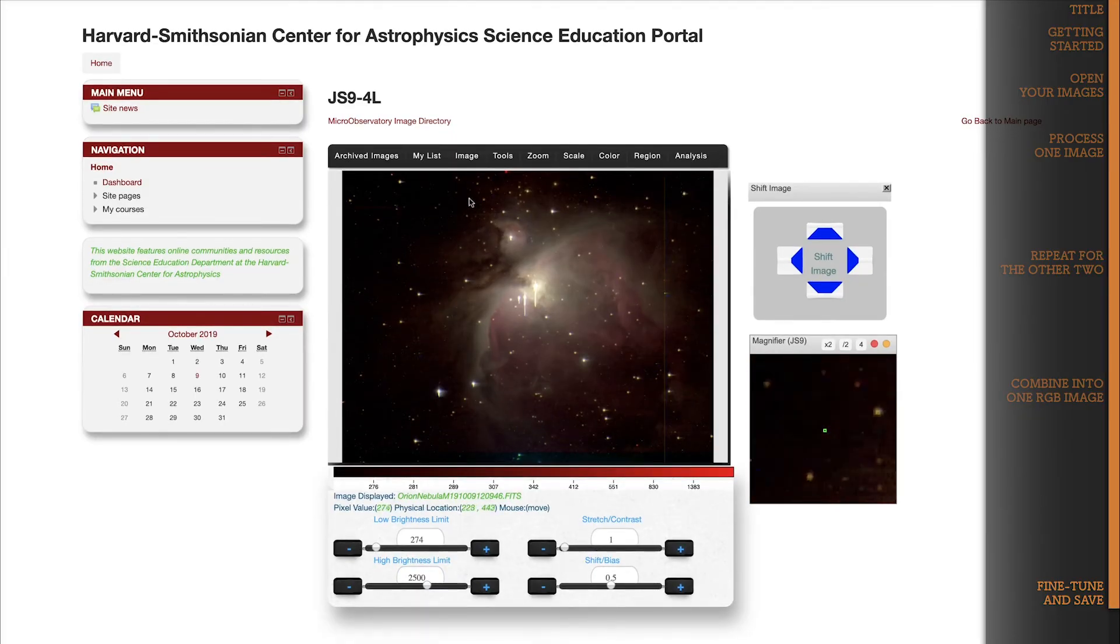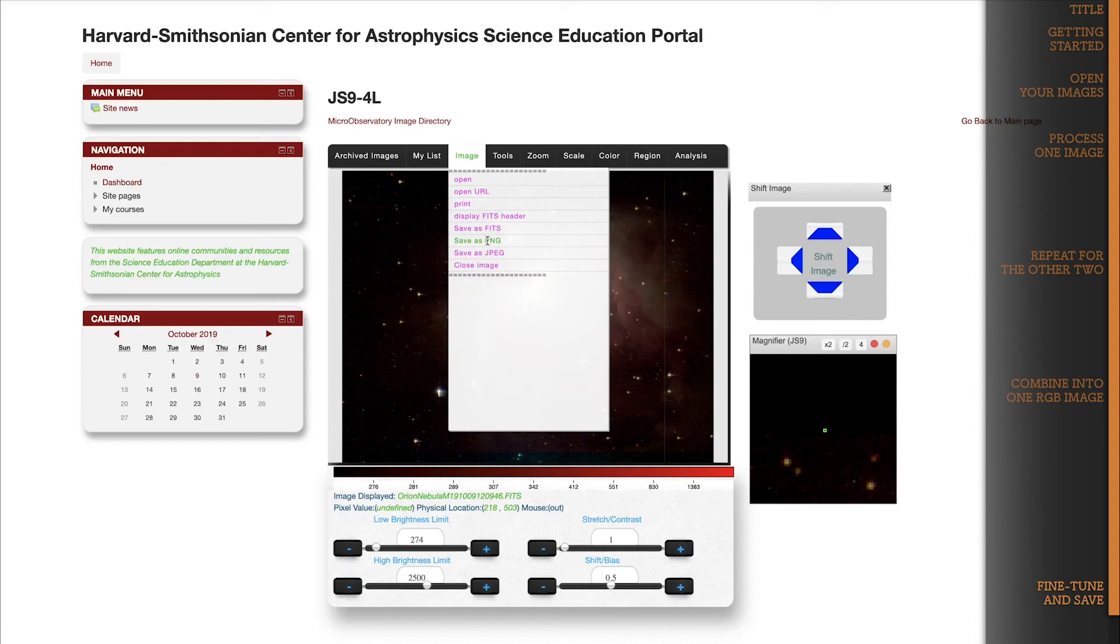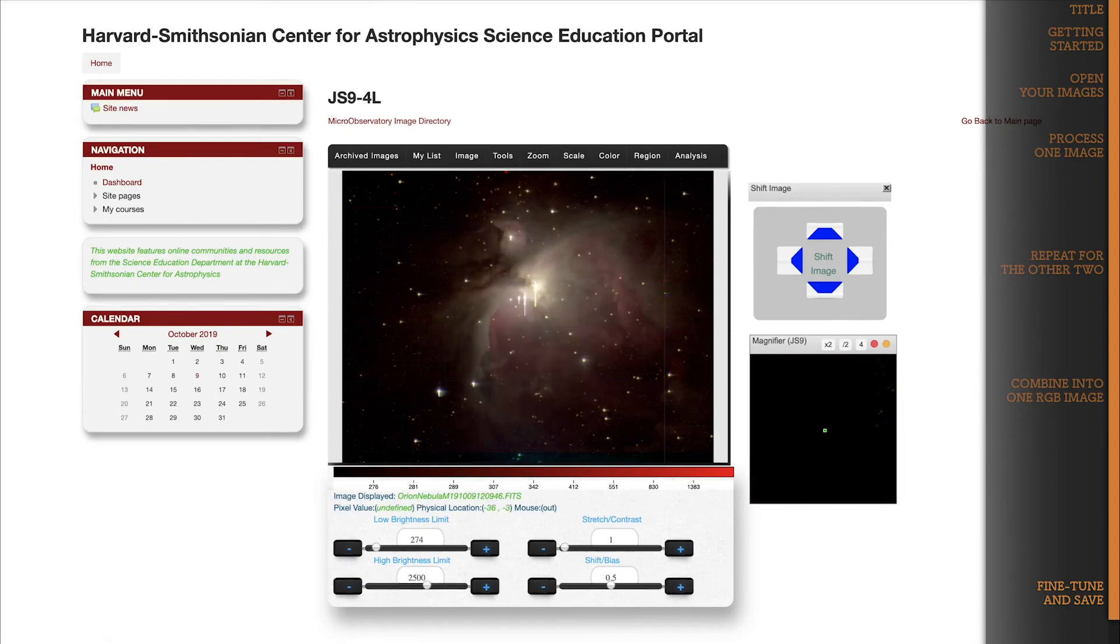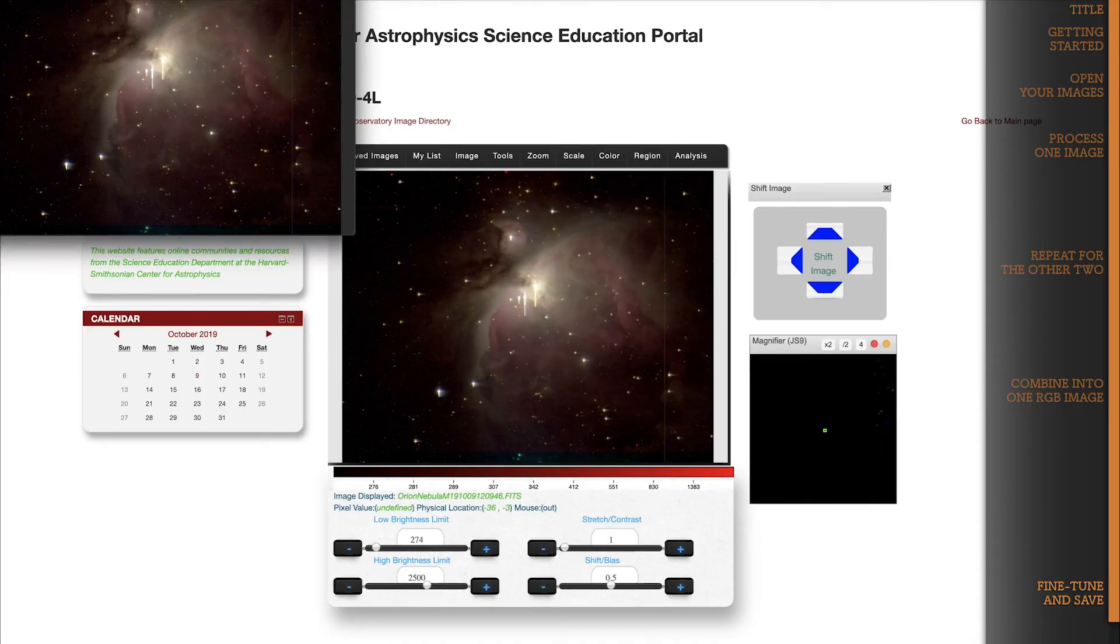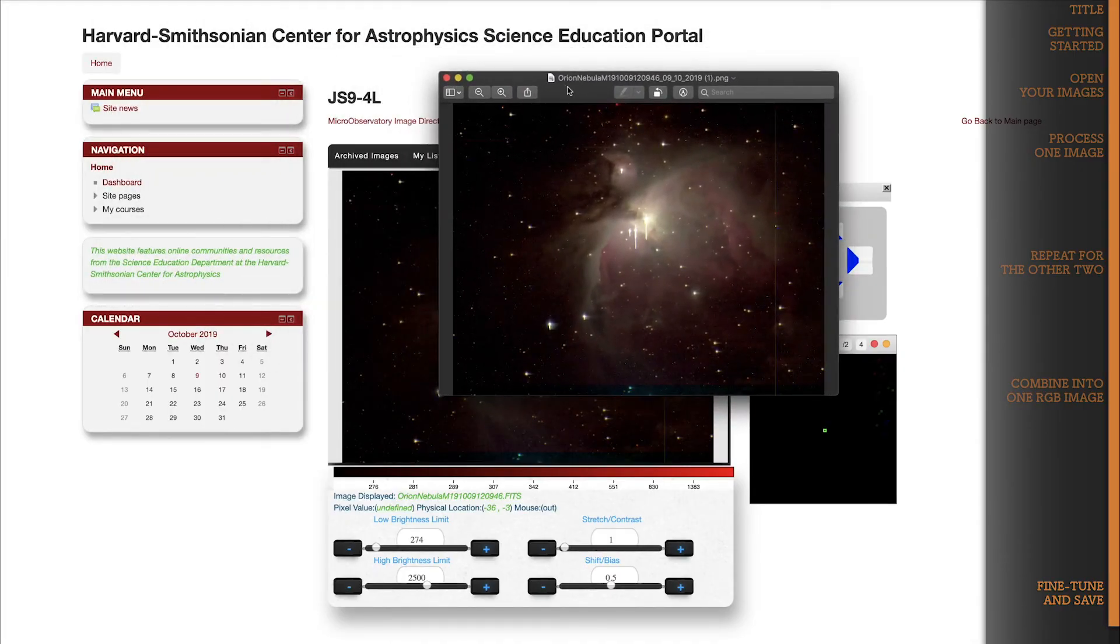Go to the image dropdown and select Save as PNG, or JPEG if you prefer. Don't choose Save as FITS though. This option will not save any of the fancy processing that you've just done. And there I go. A stunning true color image of the Orion Nebula, which I made from red, green, and blue filtered layers, and which you can now do too.